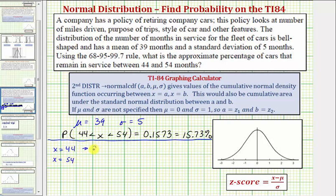So for x equals 44, we would have 44 minus 39, the mean, divided by 5, which would be 5 divided by 5, which equals 1. Which means 44 is 1 standard deviation above the mean.